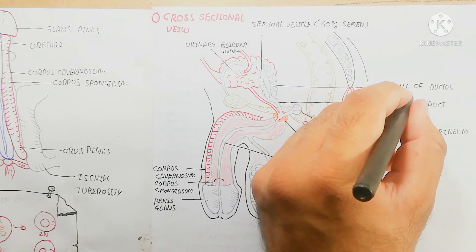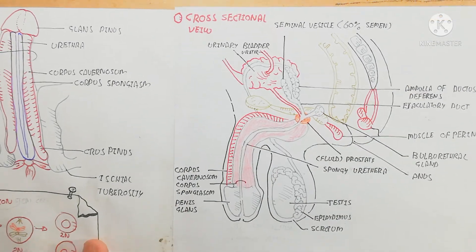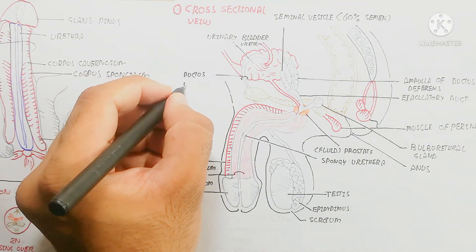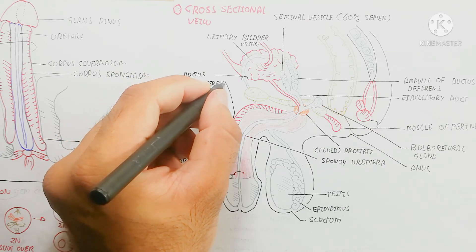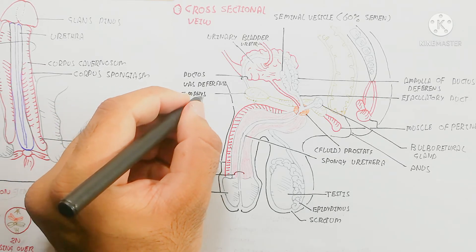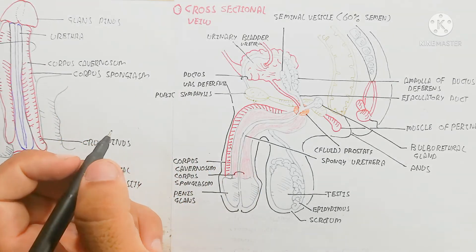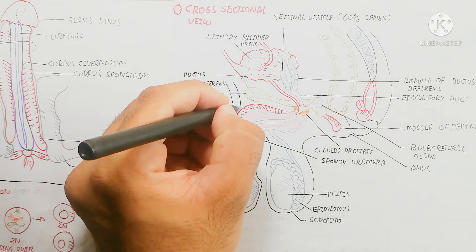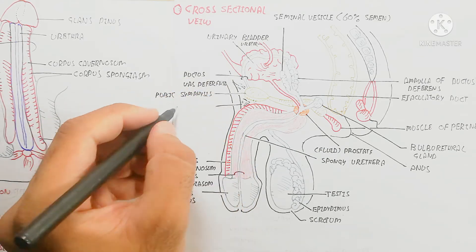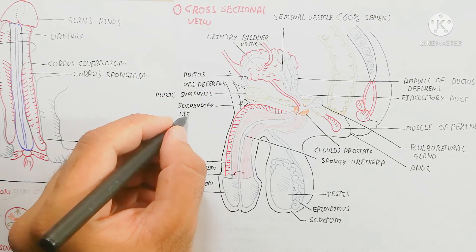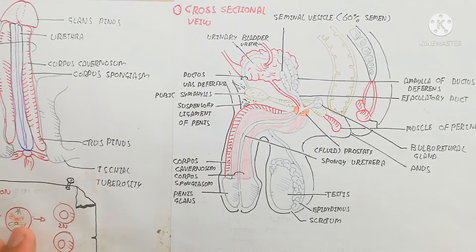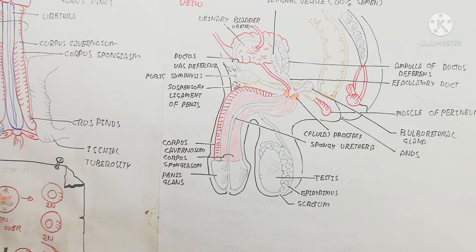Here is the ampulla of the ductus deferens shown in the figure. The ejaculatory duct is present and is used for ejaculation. Here you can see the suspensory ligament of the penis, which is used for the suspension of the penis during erection.